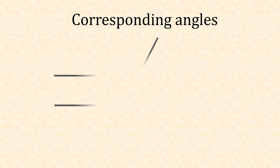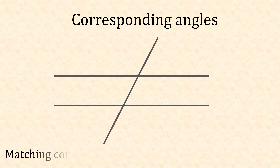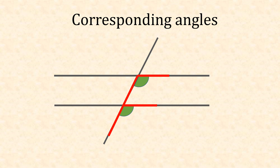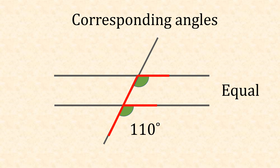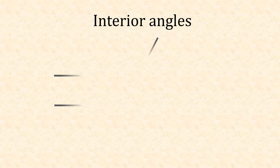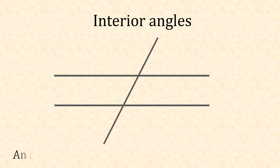For corresponding angles, we draw our parallel lines — these are in matching corners. We notice they fit into an F, and both angles will be equal. So if one equals 110°, the other will also be 110°. If we flip the F upside down or backwards, we can still see both corresponding angles are equal.